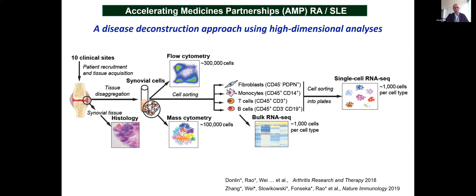Around this time we were fortunate to be part of the AMP-RA consortium, which applies high-dimensional analysis to inflamed tissues focusing on RA and lupus. Over the last five to six years we developed a pipeline to collect biopsies from RA patients and process them into parallel high-dimensional analyses including mass cytometry, histology, and RNA sequencing.